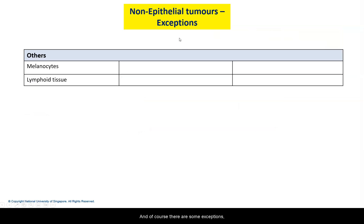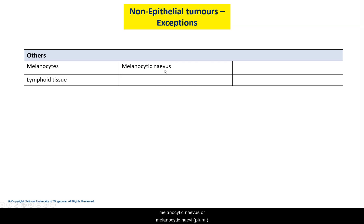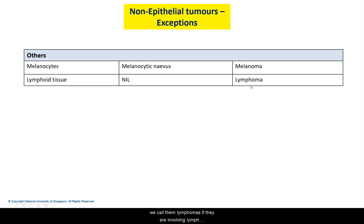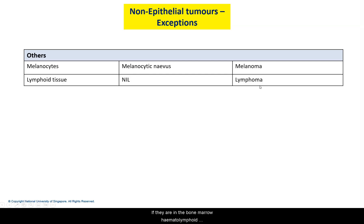There are some exceptions for certain non-epithelial tumours. For example, tumours of melanocytes — if benign, we usually call them melanocytic nevus (or nevi, plural), and malignant tumours of melanocytes are known as melanoma. For lymphoid tissue, there isn't really a benign counterpart. Malignant ones are called lymphomas if they involve lymph nodes or extranodal lymphoid tissue, or leukemias if they are in the bone marrow.